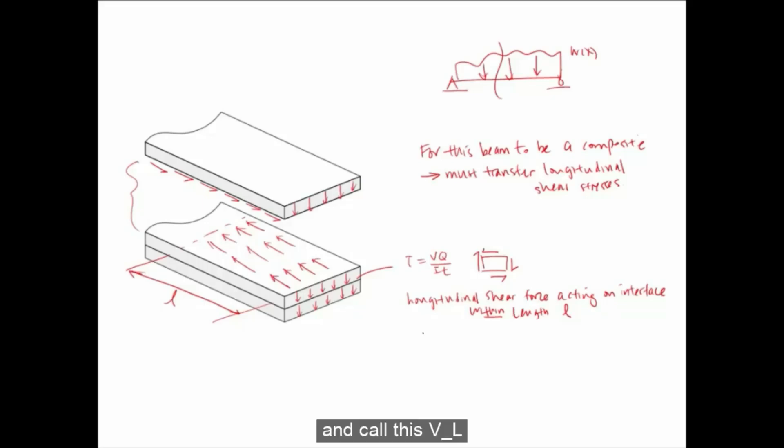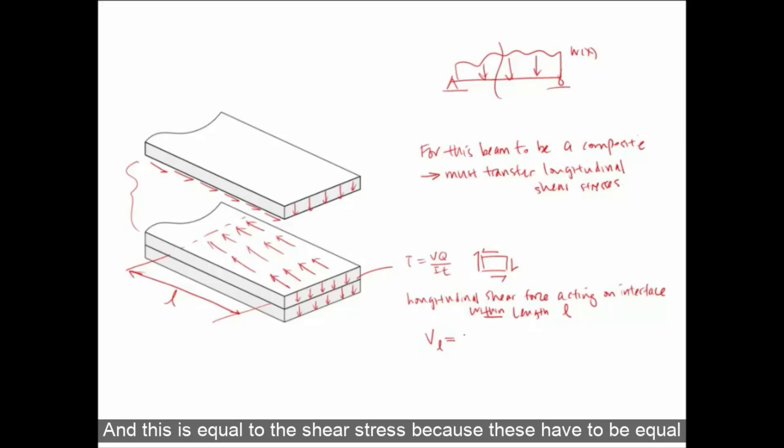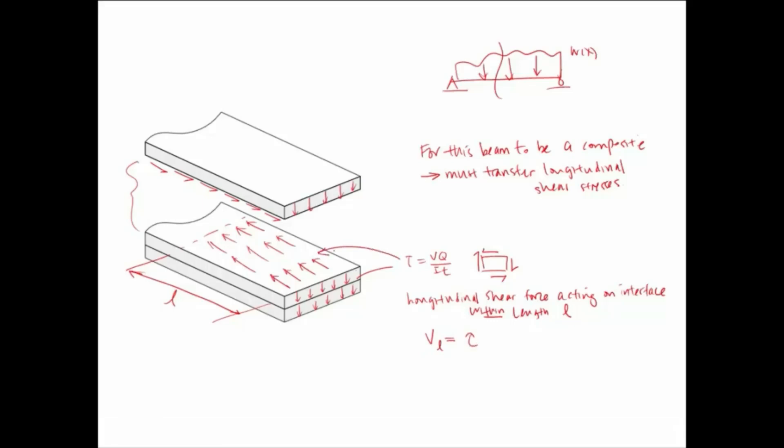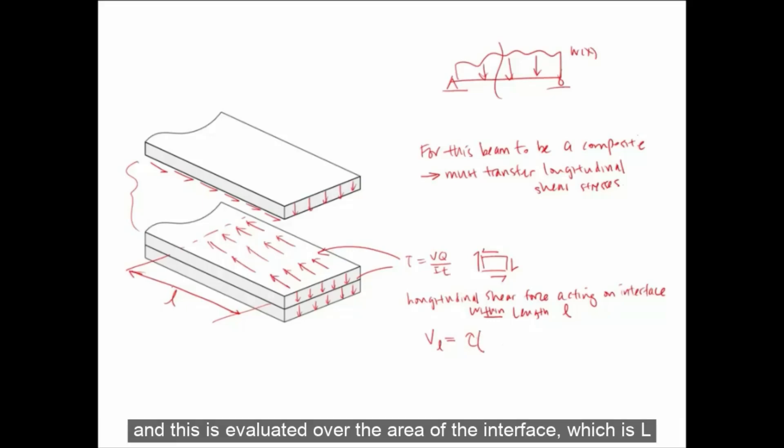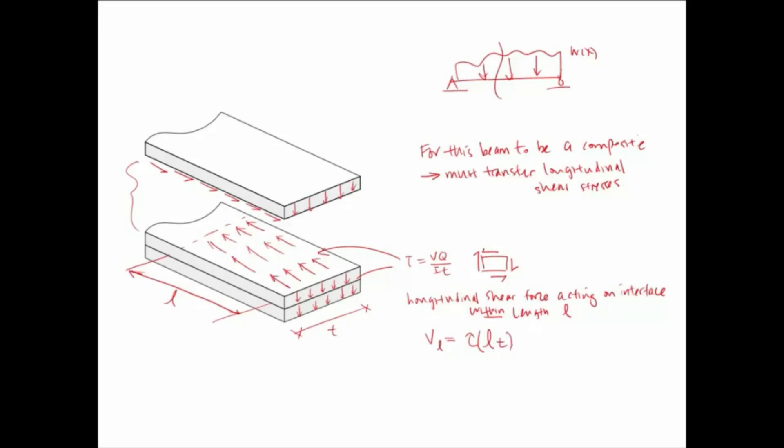So the longitudinal shear force acting on the interface is calculated within a length of L. We can call this VL, and this is equal to the shear stress evaluated over the area of the interface, which is L times the width of the beam T. So that's tau LT. Tau we know is VQ over IT times LT. This results in VQ over I times L, and this has units of force.